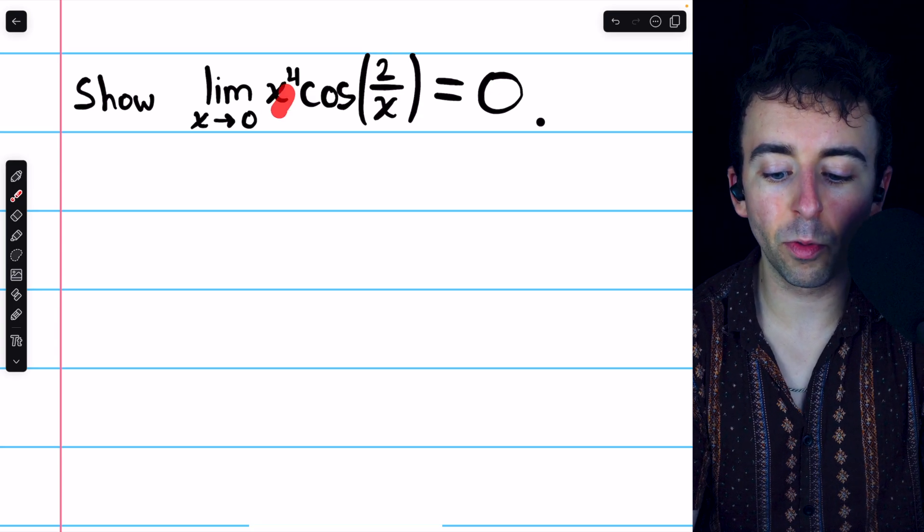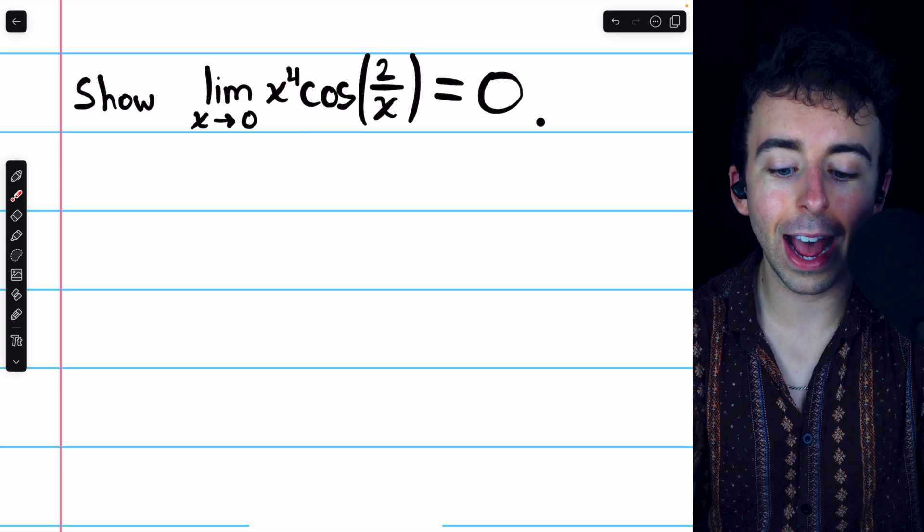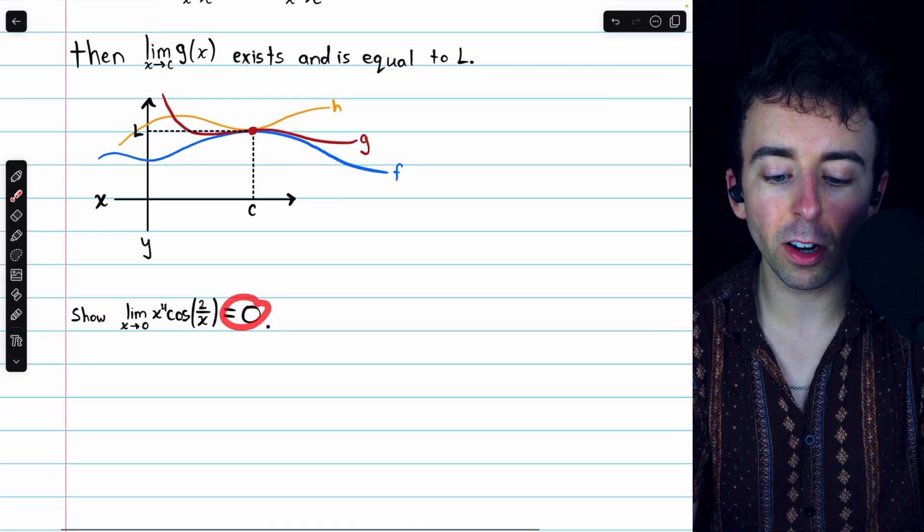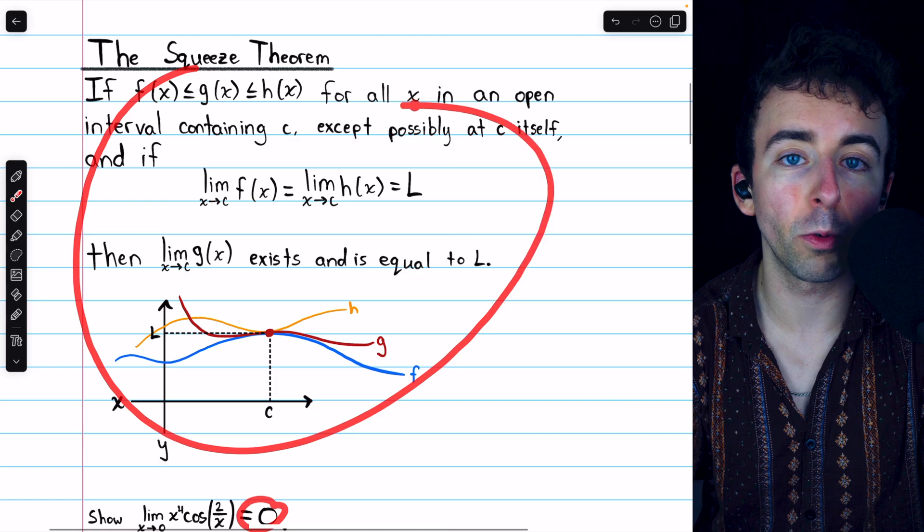To show the limit of x to the power 4 times cosine of 2 over x as x approaches 0 is equal to 0, we can use the squeeze theorem, which I've written here for your reference.